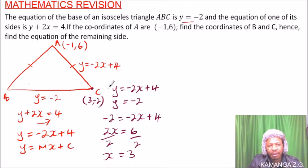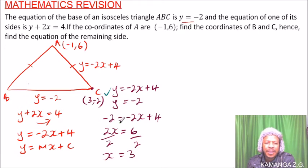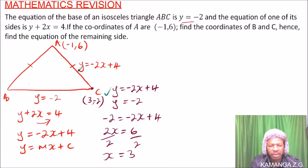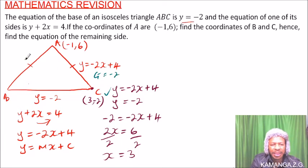Now we find B. Looking at the isosceles triangle, the slopes of the two equal sides are equal in magnitude. The gradient of AC is -2, so the gradient of AB must be +2 — equal in magnitude but opposite in sign.